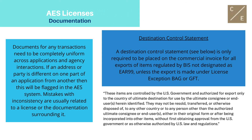Next for AES licenses is the documentation. Documents for any transactions need to be completely uniform across applications and agency interactions. If an address or party is different on one part of an application from another, then this will be flagged in the AES system. Mistakes with inconsistency are usually related to a license or the documentation surrounding it. A destination control statement is used to bind all parties to the knowledge of the final destination of a shipment. A destination control statement is only required to be placed on a commercial invoice for all exports of items regulated by BIS not designated as EAR 99, unless the export is made under license exception BAG or GFT, which are baggage and gift respectively. Below is a sample of a destination control statement offered by BIS, but this is not the mandated language. An exporter may put language that is more simple in the contract or that is more extensive.